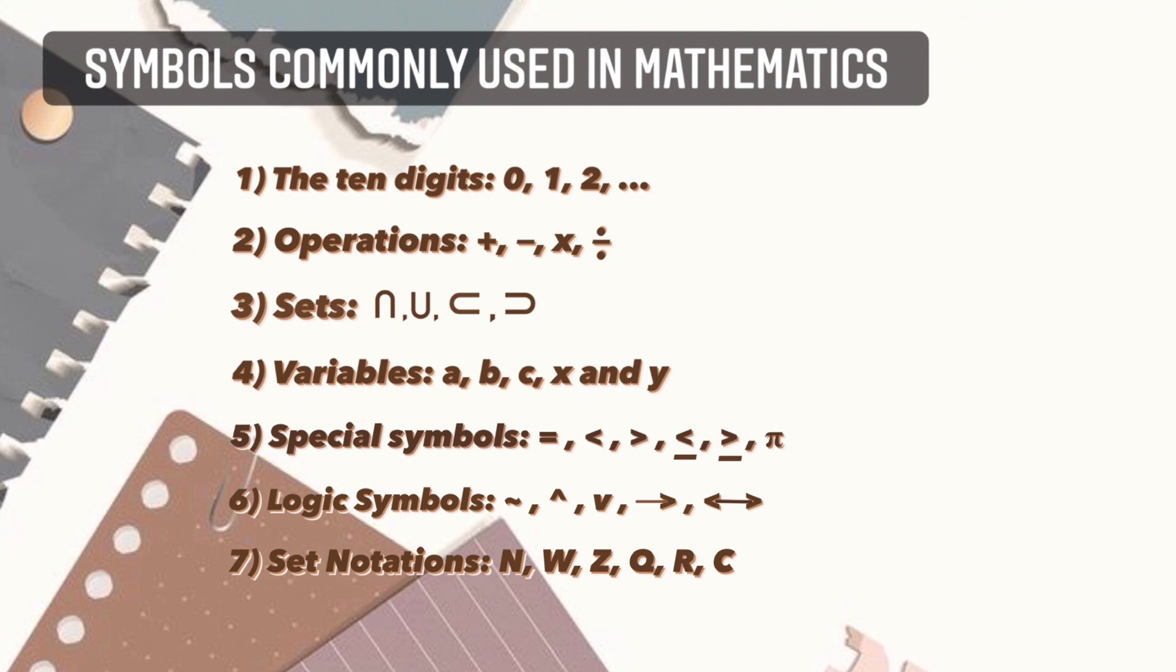Third is the sets: intersection, union, subset, and superset. Fourth is the variables such as A, B, C, and even X and Y.